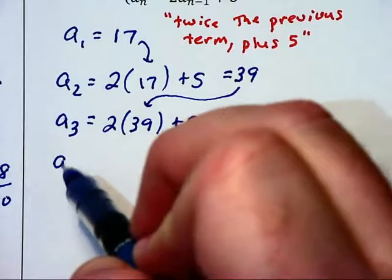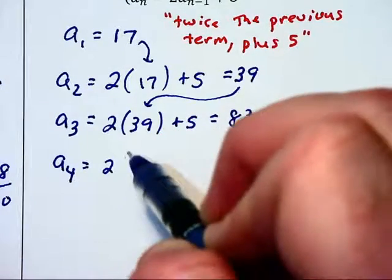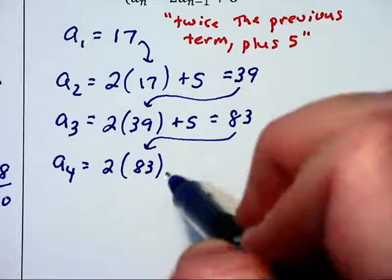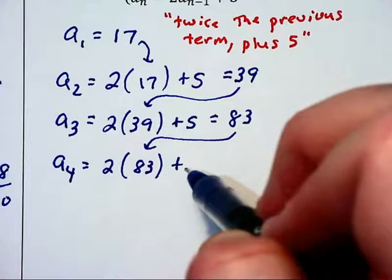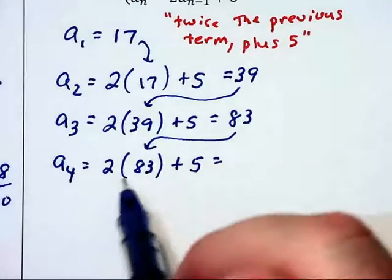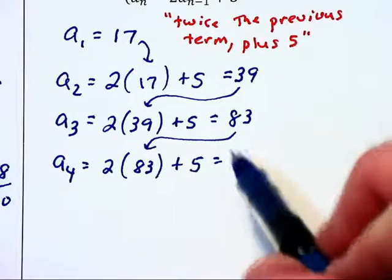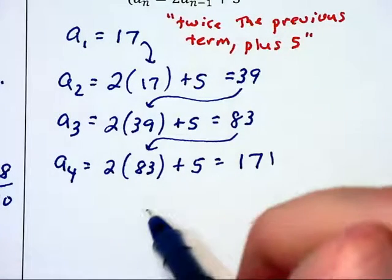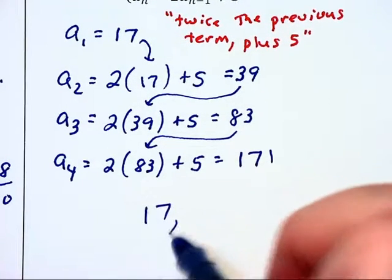And the fourth term will be 2 times the previous term of 83 plus 5. So we have 166 plus 5 which is 171. And there are our first four terms: 17, 39, 83, and 171.